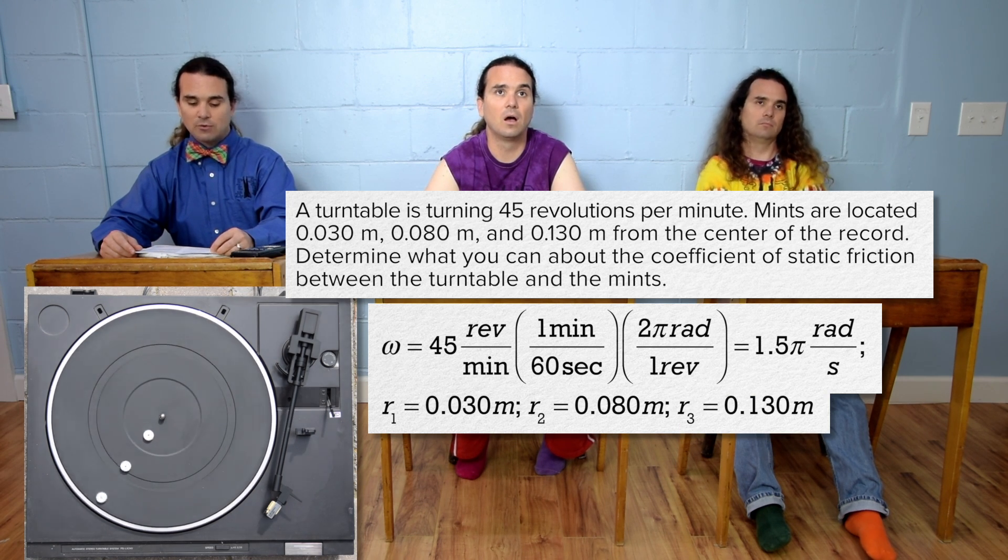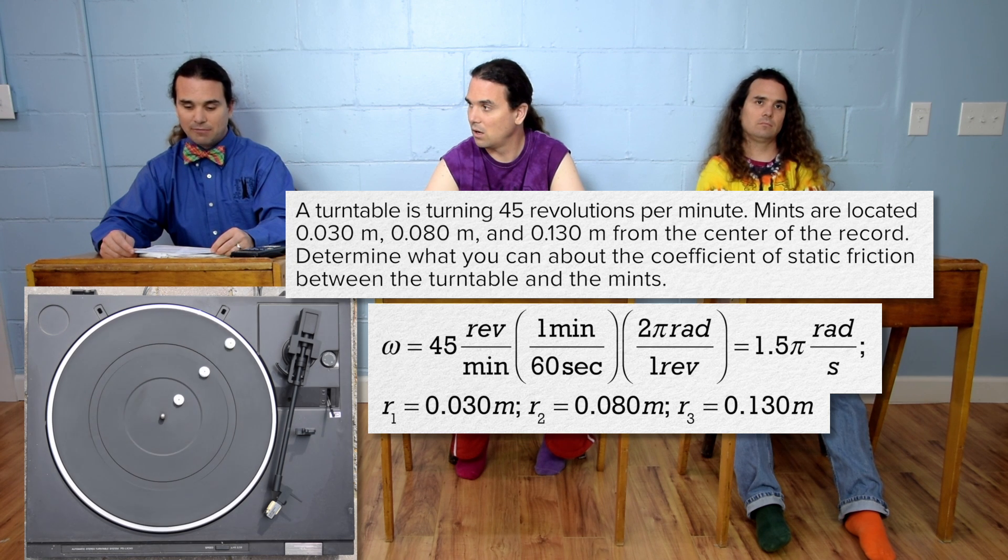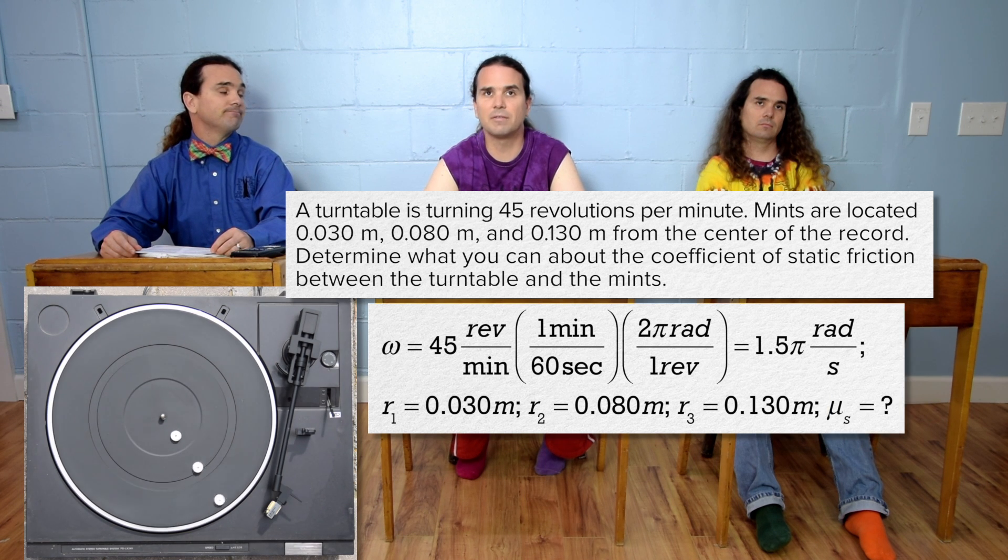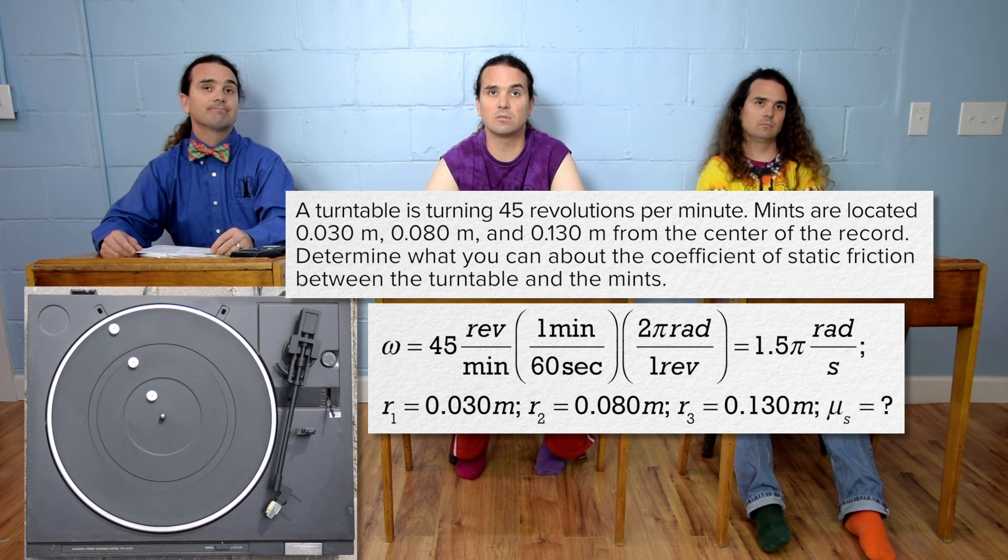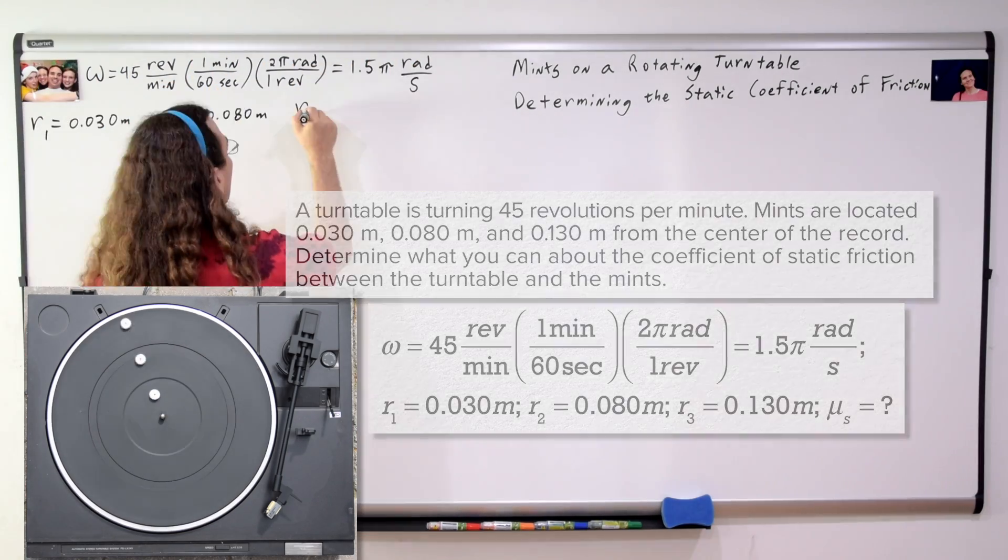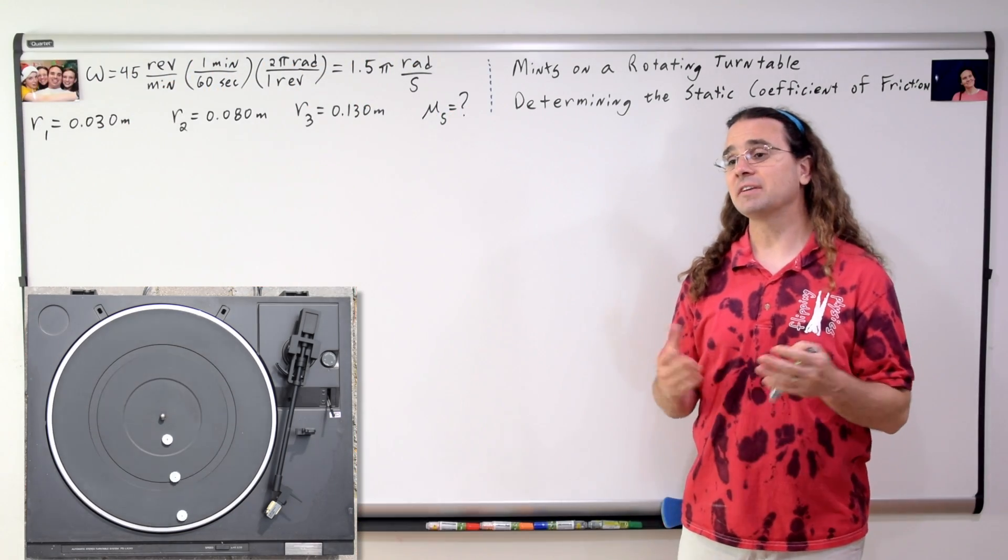Mr. Determine what you can about the coefficient of static friction between the turntable and the mints. The coefficient of static friction equals question mark. Bo, please begin solving the problem.